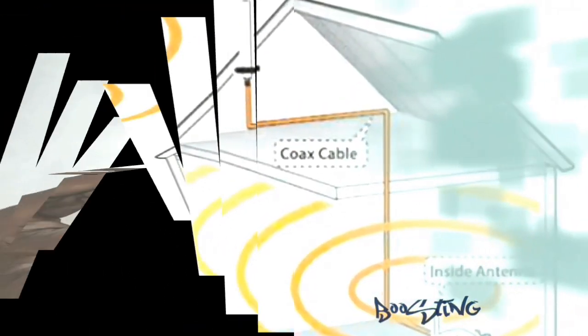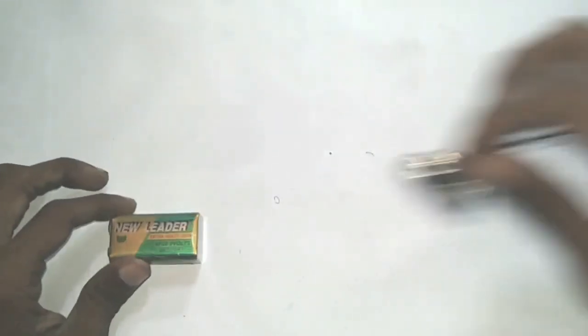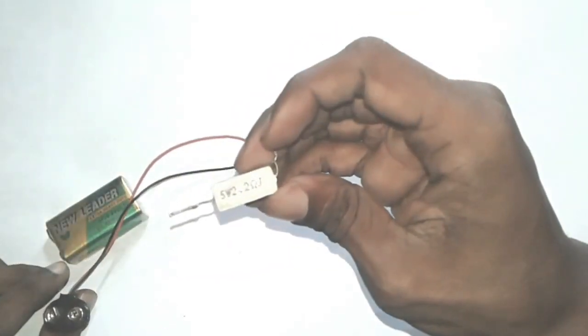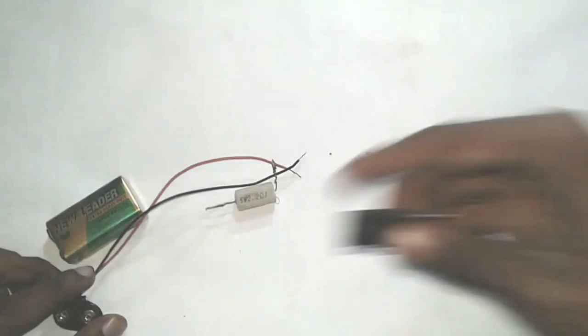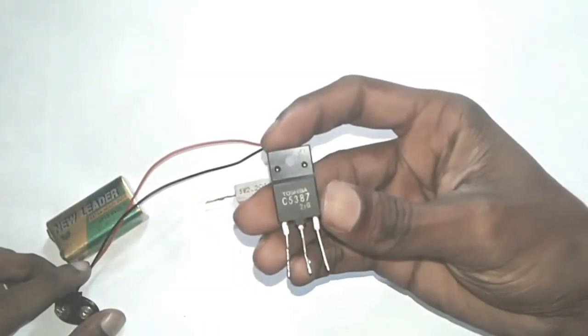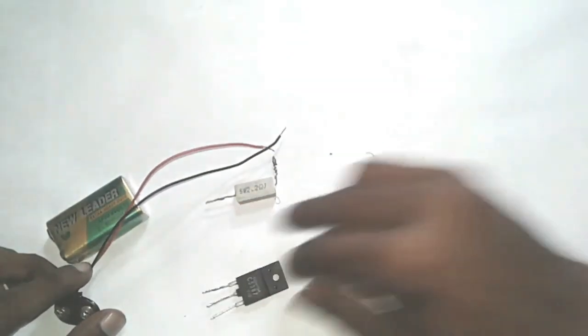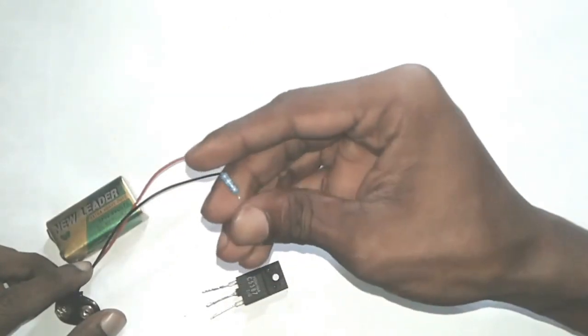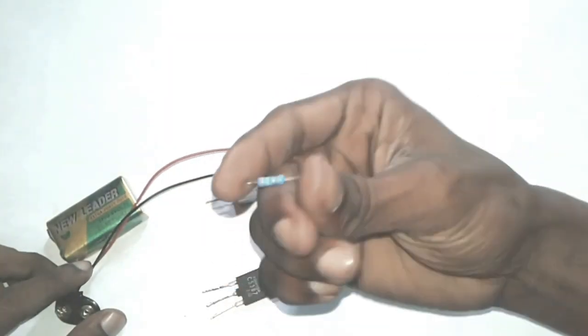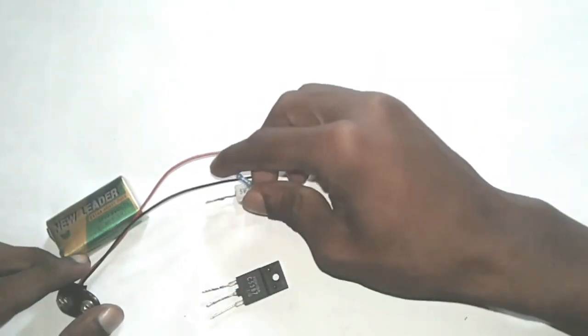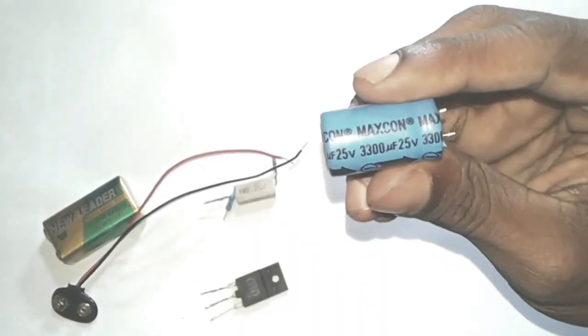We need a 9 volt battery, 9 volt battery connected to a 5 ohm resistor, a high speed transistor. Here I am using C5387. We need high value resistor, 273K.